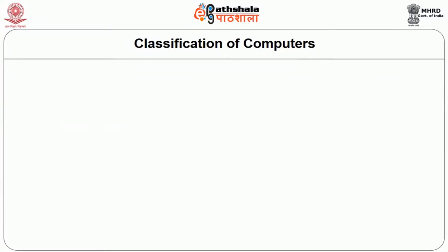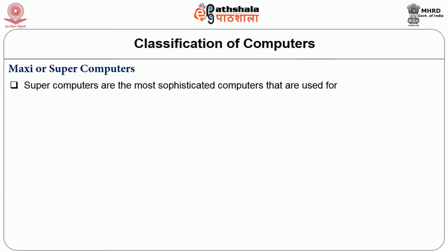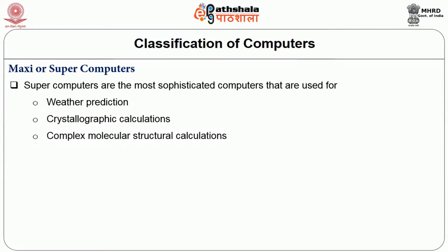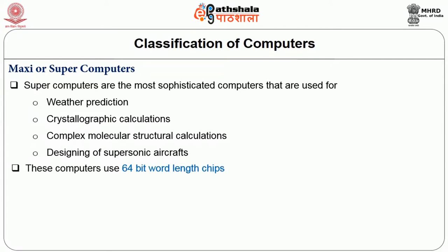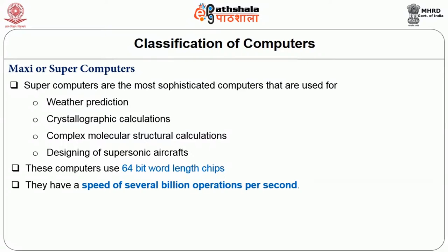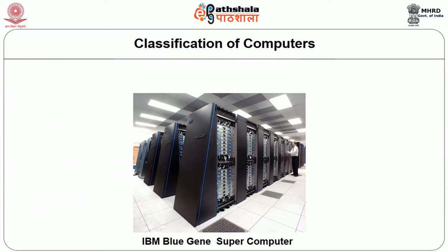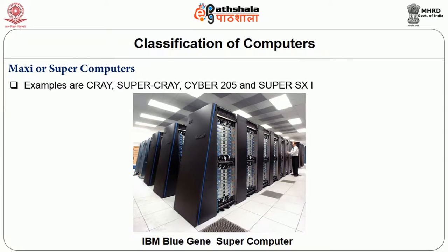Supercomputers are the most sophisticated computers, used for weather prediction, crystallographic calculations, complex molecular structural calculations, and designing supersonic aircraft. These computers use 64-bit word length chips and have a speed of several billion operations per second, with memory capacities of several gigabytes. Examples of supercomputers are Cray, Super Cray, Cyber 205 and Super SX1.